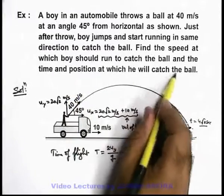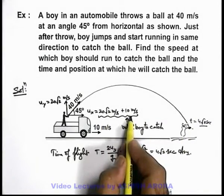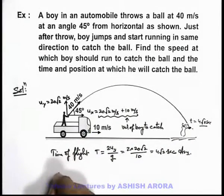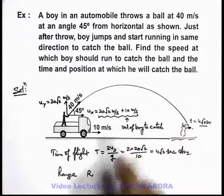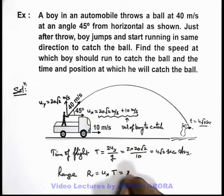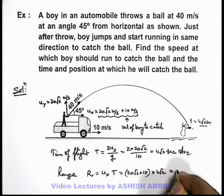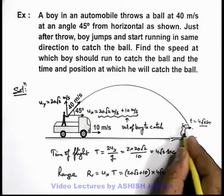For the position at which the boy will catch the ball, the boy is running at speed 20 root 2 plus 10 meters per second. So in 4 root 2 seconds, the range of the projectile is velocity in x direction multiplied with time of flight, which is 20 root 2 plus 10, multiplied with 4 root 2. This gives a distance of 160 plus 40 root 2 meters. This is the position at which the boy will be able to catch the ball.